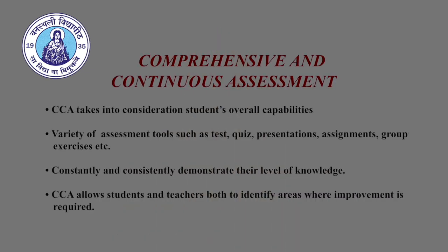Universities should do away with their annual system of assessing students. Comprehensive continuous assessment looks at the student's overall capabilities in the form of regular assignments — a mix of various evaluation tools such as tests, quiz, presentations, assignments, group works, exercises, etc. This allows students to constantly and continuously demonstrate their level of knowledge and also identify areas where improvement is required. Further, it allows teachers to evaluate the effectiveness of their teaching strategies and modify them to include remedial activities for students who are not performing as per expectation.